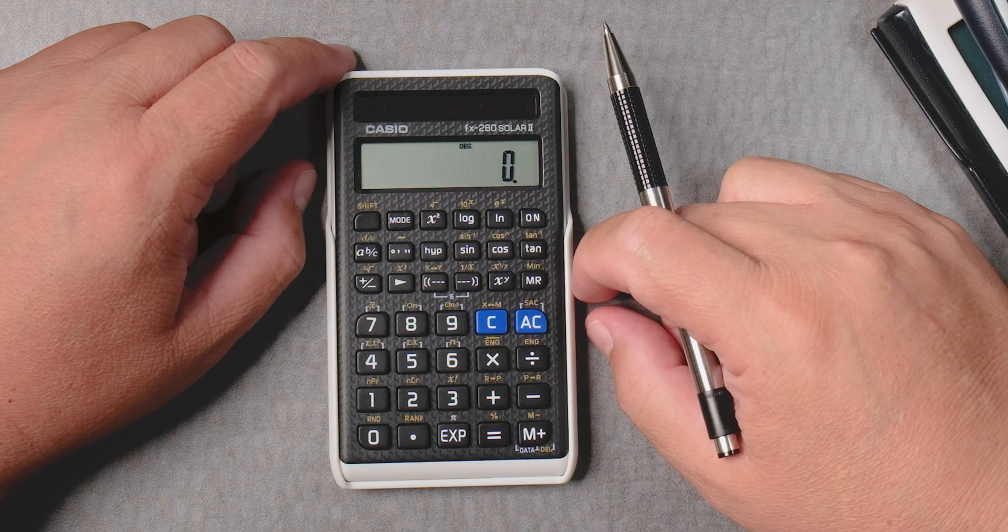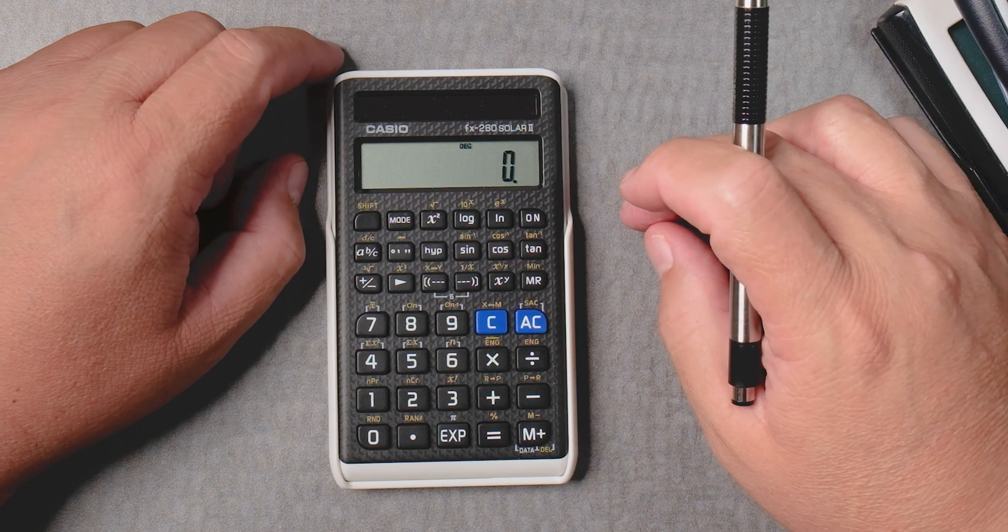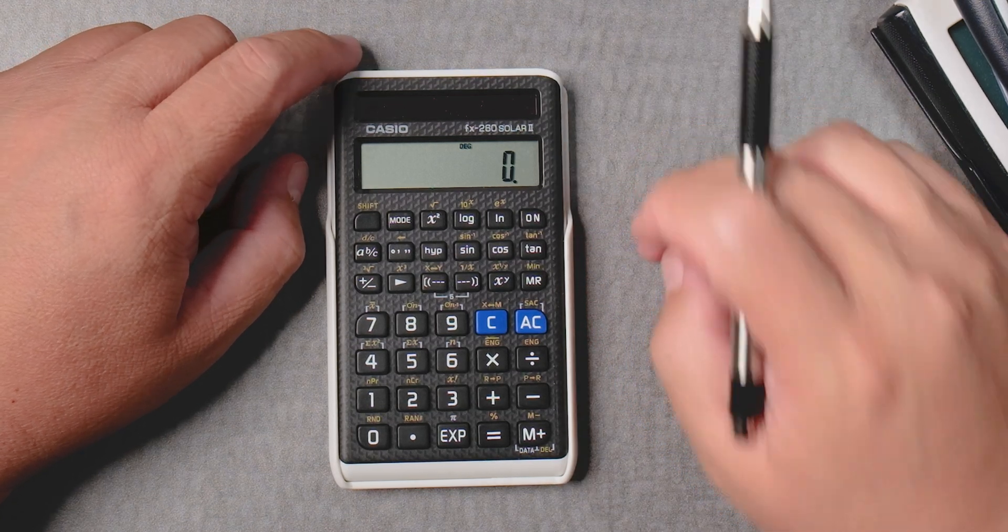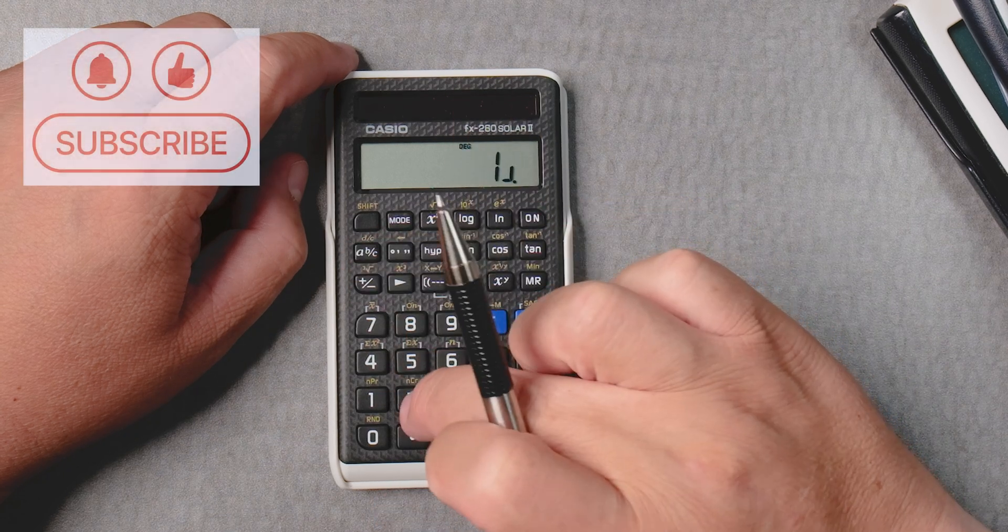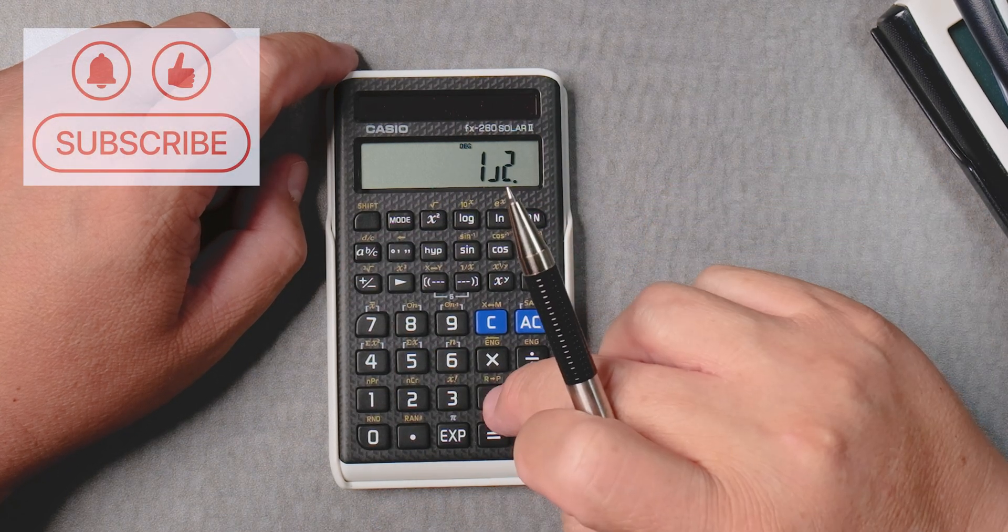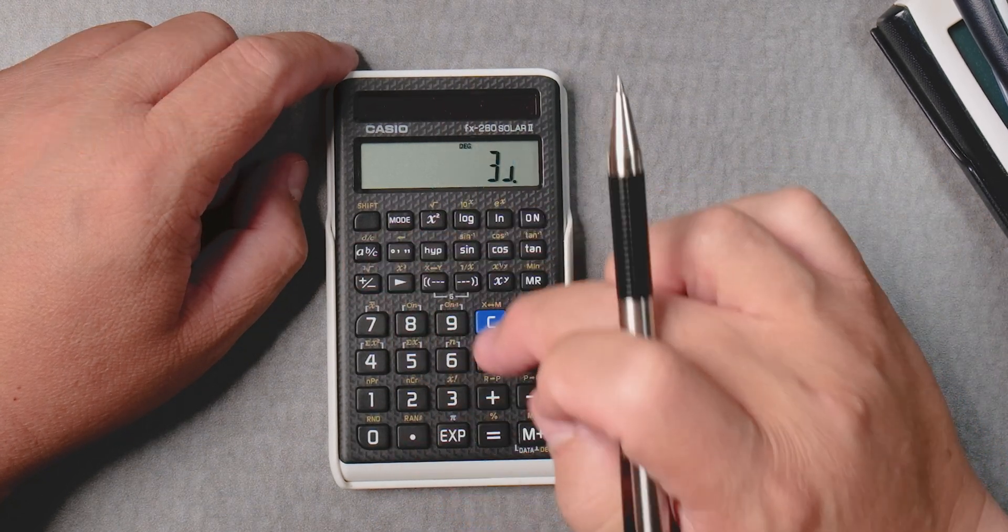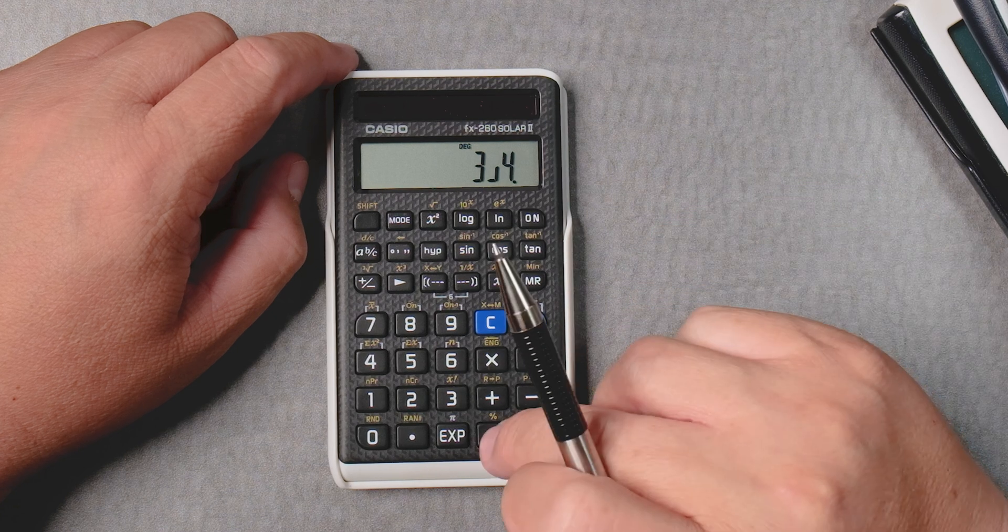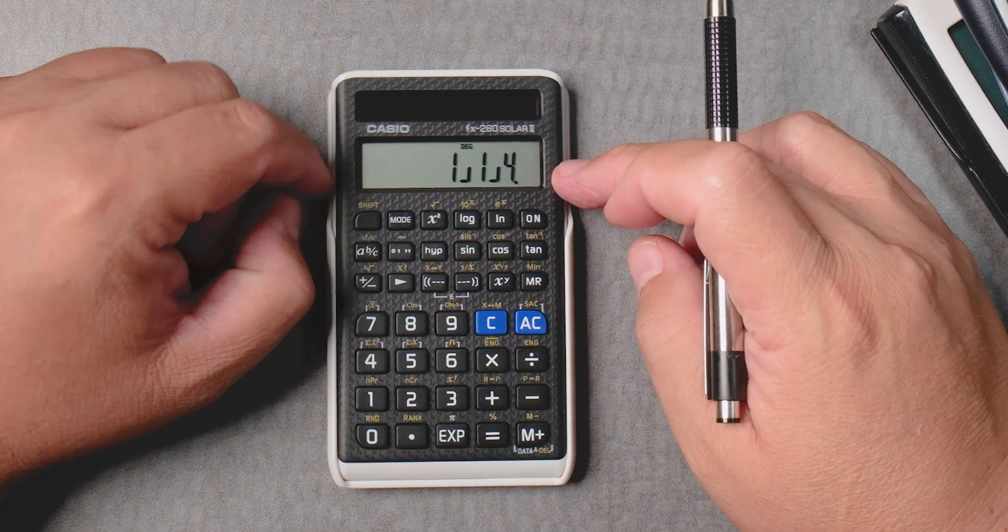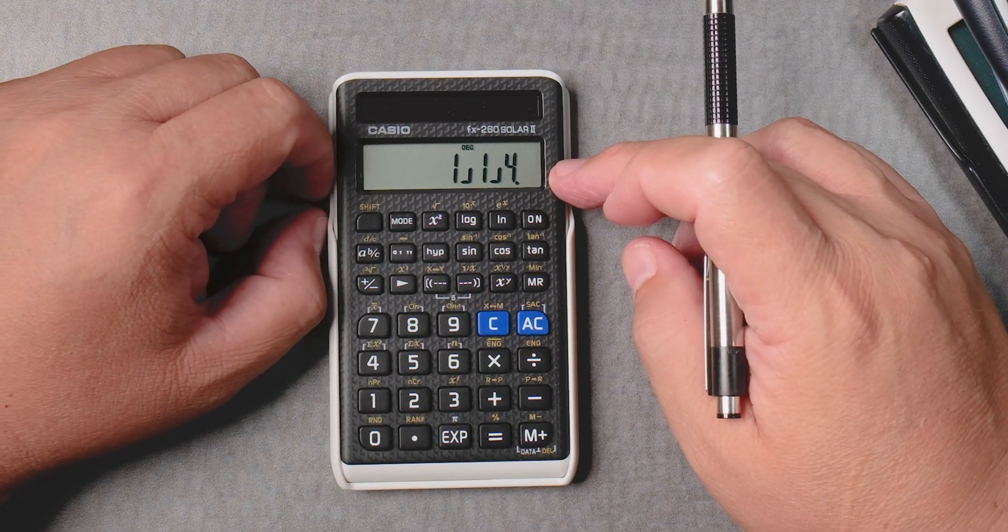So, let's say I want to do half plus 3 over 4, so 1abc2 plus 3abc4, and then we press equals. 1 and 1 fourth, it's a mixed number.